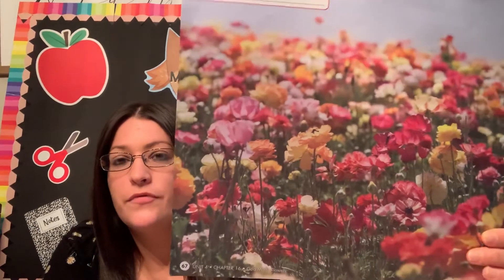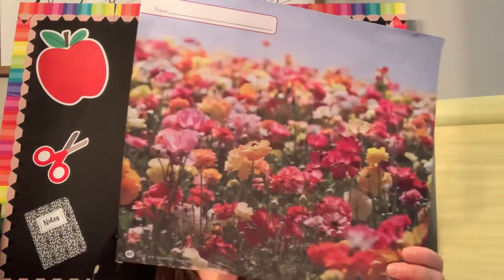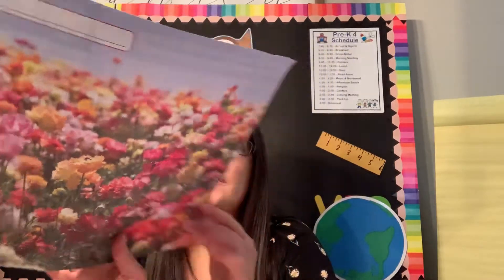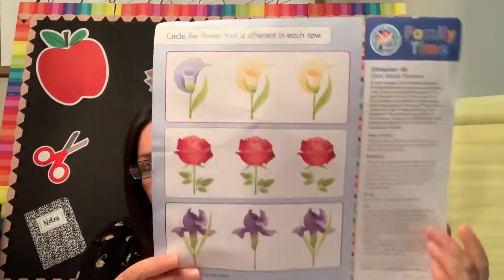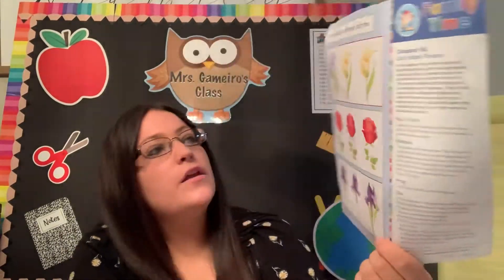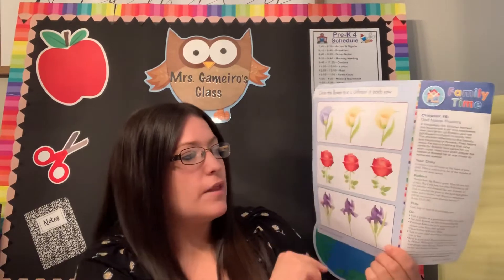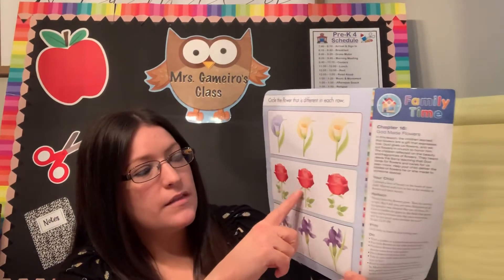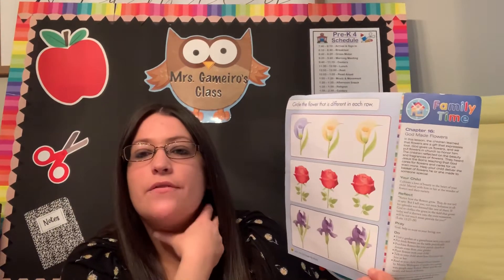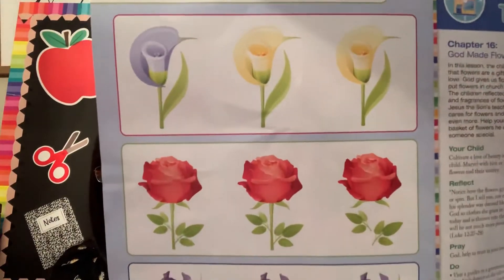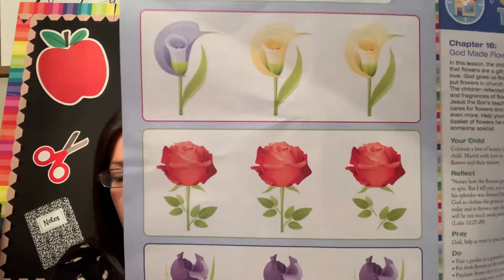You might help mom or dad in the spring and summer plant some flowers. I want you to then turn your paper over and you're going to circle the flower that is different in each row. So you're going to look at the three flowers, find the one that's different, and circle it. I don't want to give any away, but that's what you're going to do for this activity.